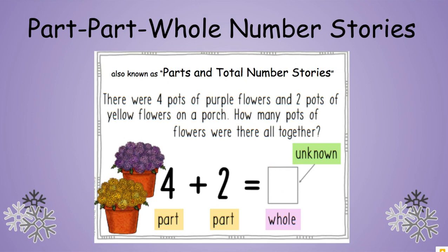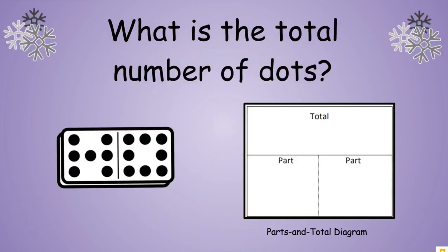Now let's try one on our own — let's see how we do. Here is a parts and total diagram. Sometimes the word 'whole' will be right here, but that's okay; it's the exact same thing, just worded a little differently. What I want to find out today is how many dots we have on this domino in all. It looks like we have two numbers: on one side we have seven, and on the other side we have eight.